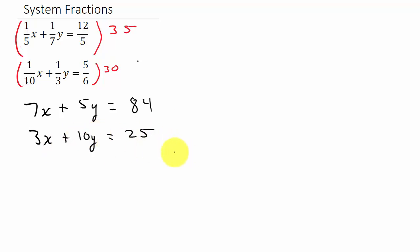Alright, so now here's our system. So remember when you're solving the system, we're going to use the addition method. Okay. So remember when you add these, you want one of the variables to go out. Okay. So we could multiply this equation by what?